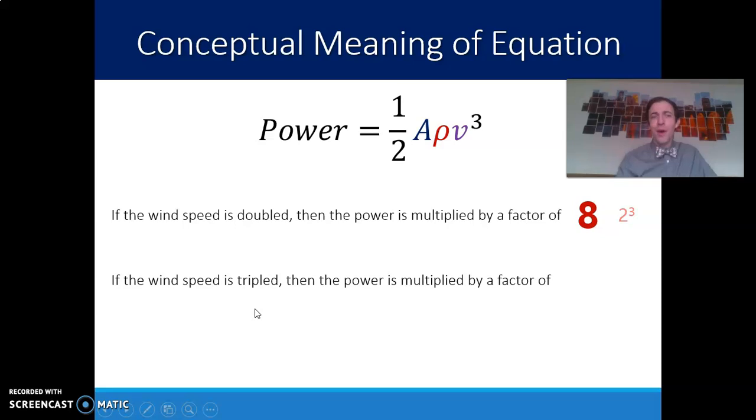I would like you to think to yourself, what would happen to the power if the wind speed tripled? How much would the power be multiplied by if I tripled the wind speed? It's a pretty simple calculation. It's just 3 cubed. 3 times 3 is 9 times 3 is 27. So just tripling the wind speed gives you 27 times more power.